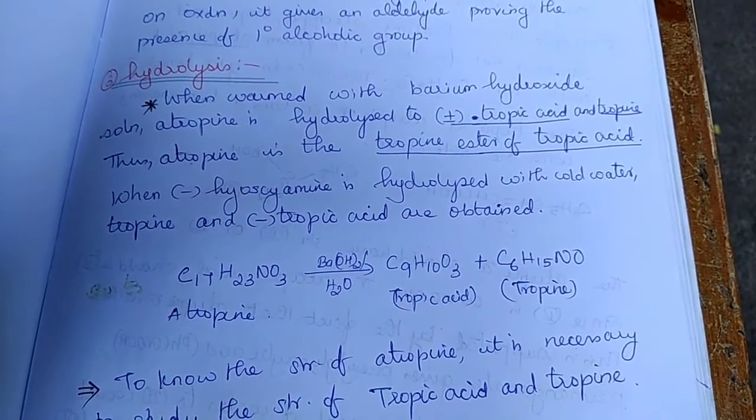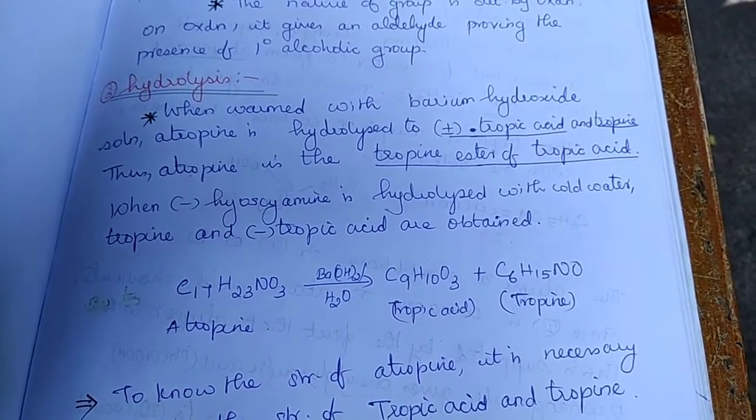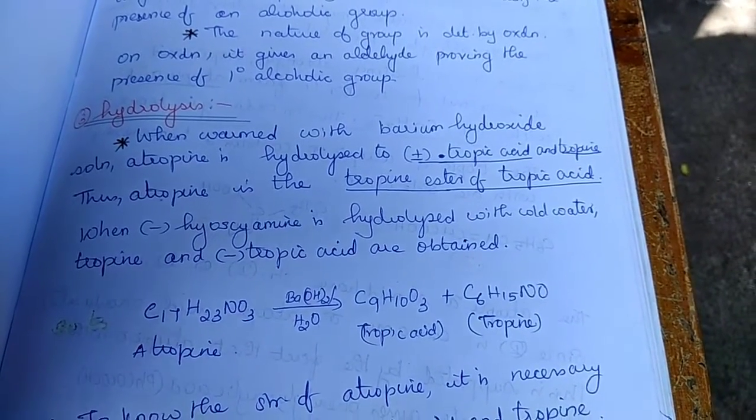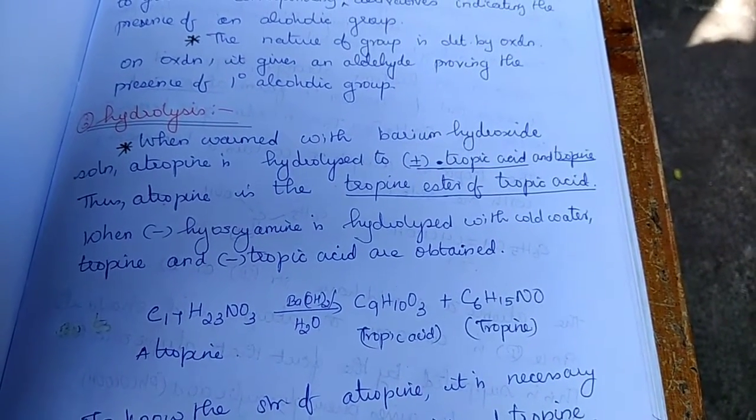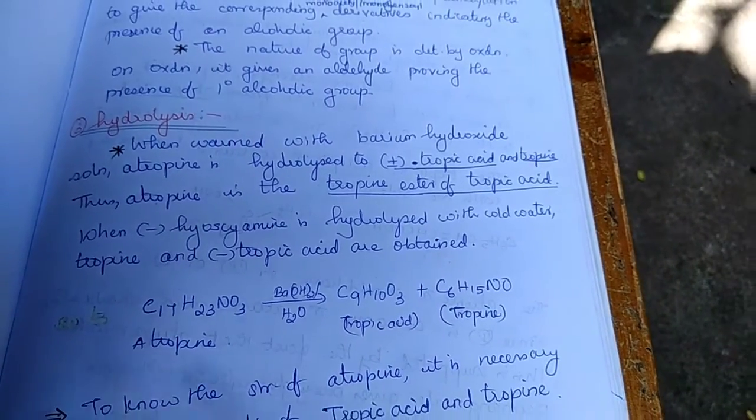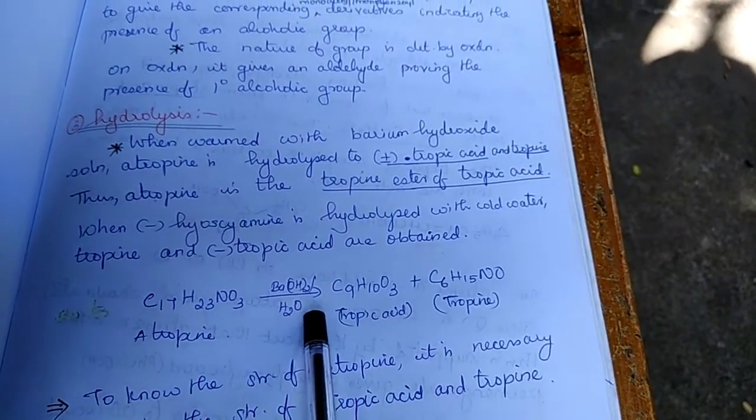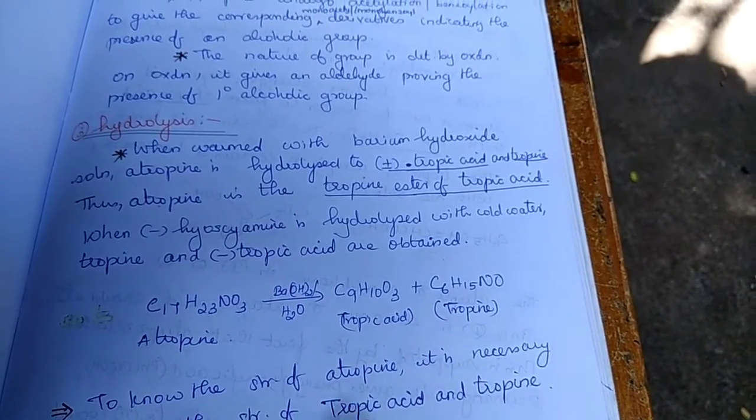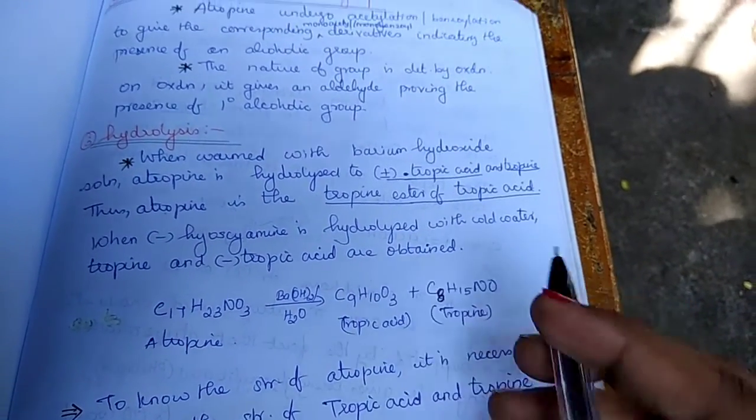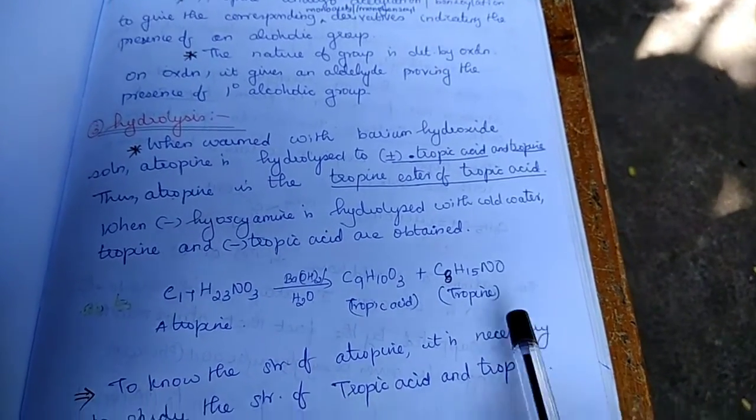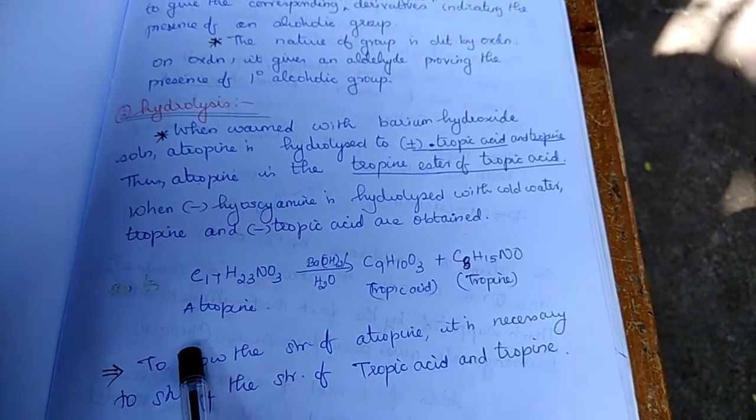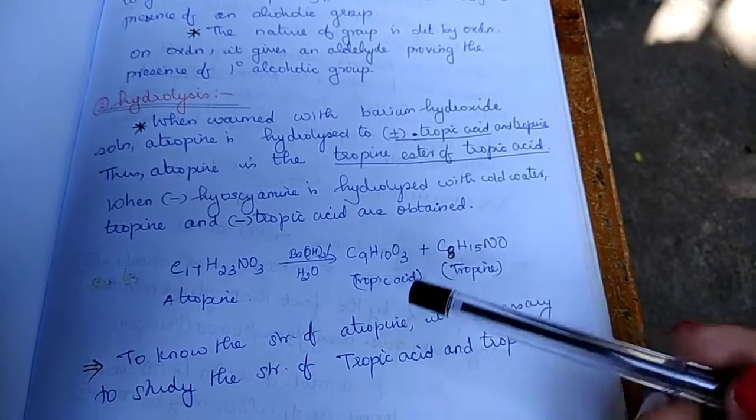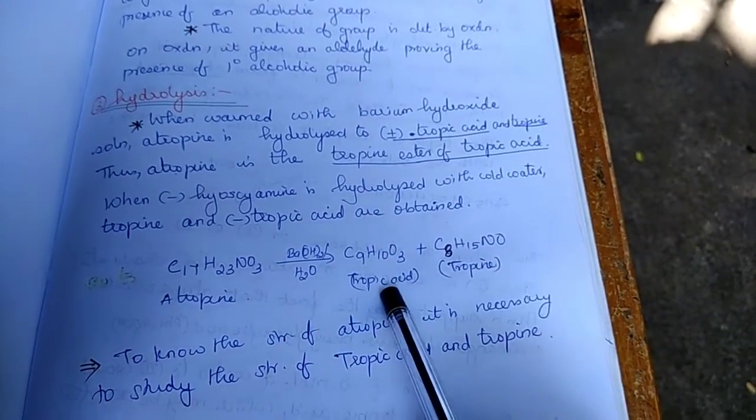The next point is hydrolysis. When atropine is hydrolyzed with barium hydroxide, atropine is hydrolyzed to plus or minus tropic acid and tropine. As you can see from the reaction, atropine with hydrolysis with barium hydroxide we get tropic acid and tropine. To know the structure of atropine, now we have to study the structure of tropic acid and tropine.